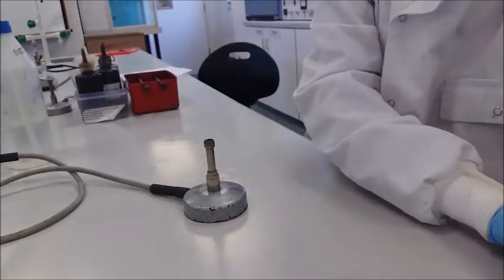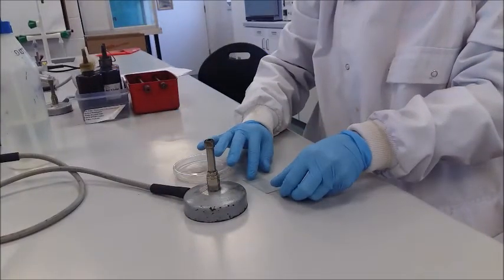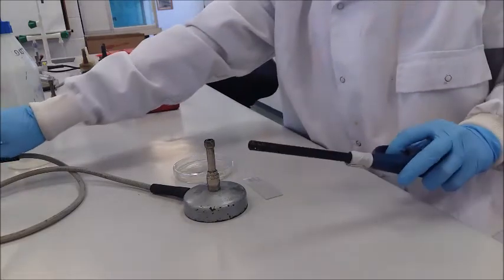To begin, we must first prepare a smear slide. Take a clean slide and place it near the flame. Sterilize the wire loop in the flame.